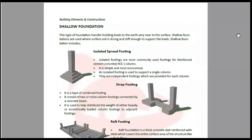One type is isolated spread footing. We use RCC columns — concrete columns using steel and concrete. Isolated spread footing is economical and is used to support a single column. This is why we support a single column with isolated spread footing.